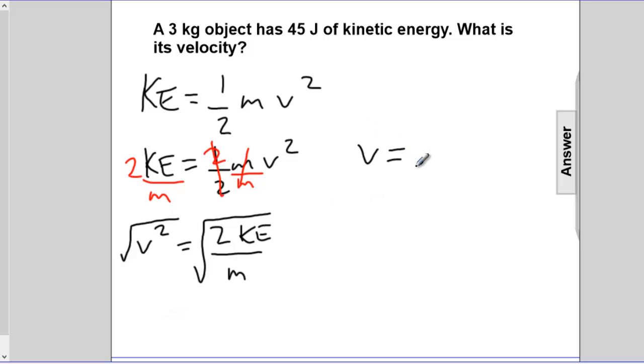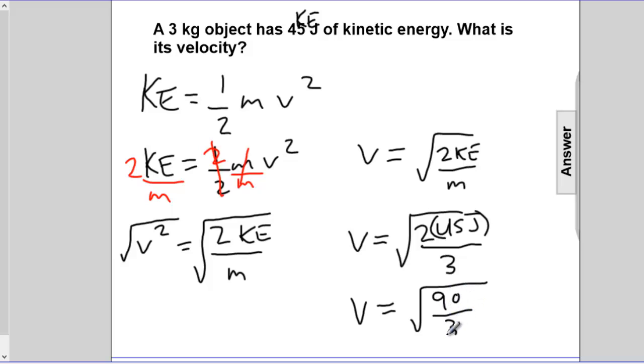I'm just going to come up here and write again. So velocity will be equal to the square root of 2 times the KE divided by m. And then finally, we'll sub in the values, the numbers. 2 times what the KE is. Remember, the KE is 45 joules, divided through by what the mass is, 3 kgs. So the velocity will be 2 times 45 is 90 divided by 3.